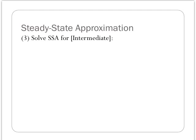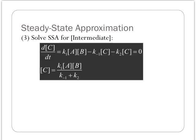My steady state approximation, my SSA, dC/dt was equal to K1AB minus K negative 1C minus K2C. That all equals 0. So I'm just going to algebraically solve the math here for the concentration of C. And the concentration of C is K1AB divided by K minus 1 plus K2. So that's my concentration of my intermediate.